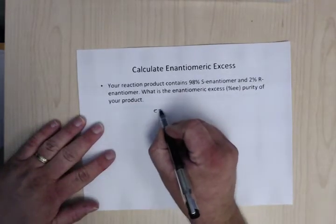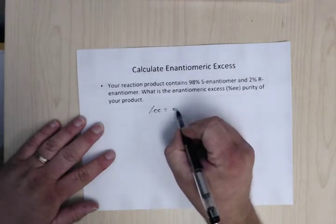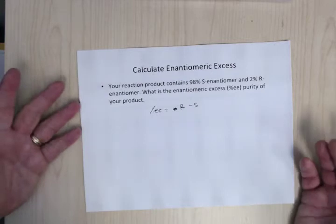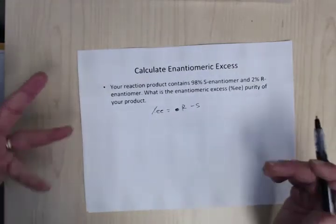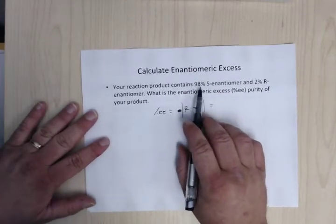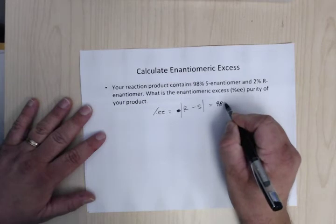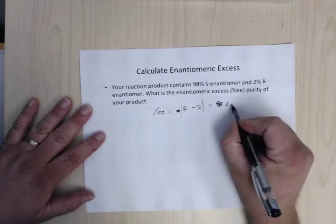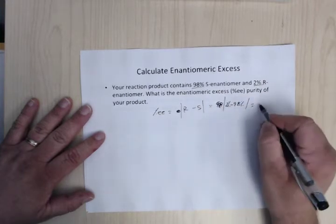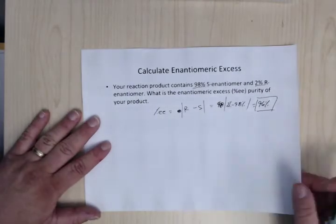So, for enantiomeric excess, the percent EE, it's going to be, you can do R minus S, although it doesn't really matter, because if you get a negative number, you just make it positive, so you could say, like, the absolute value, if you wanted to. So, it's basically just how much more of one enantiomer you have over the other, so that's all it's saying. So you would have, in this case, this would be 2 minus 98. Two minus 98, the absolute value of it, so it would be 96%. The higher this is, the better, the more enantiomeric you would have.